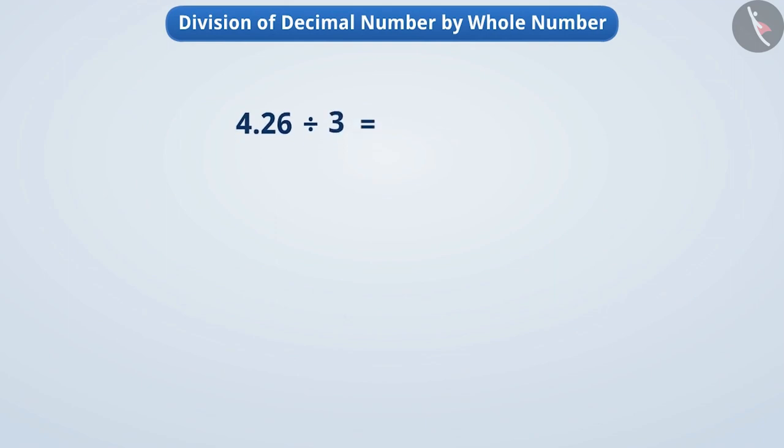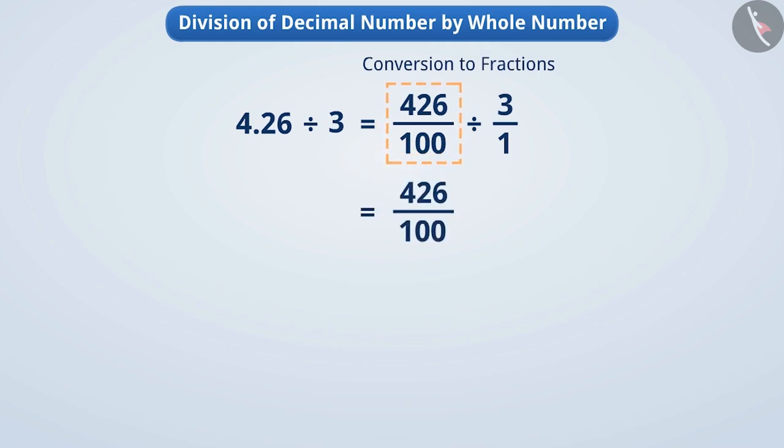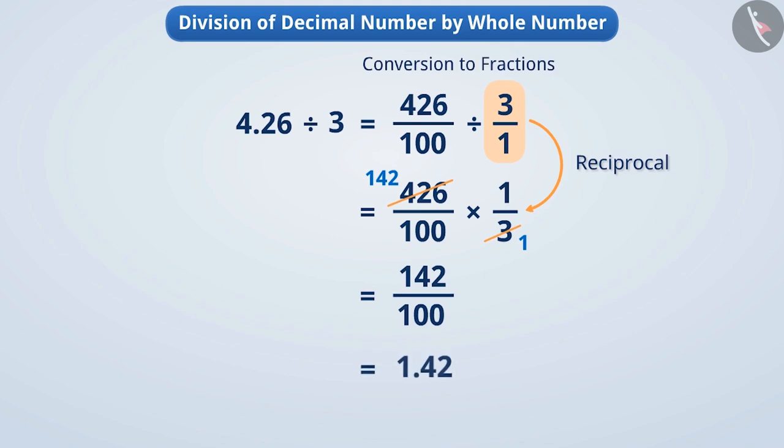To divide decimal numbers in mathematics, we can first express them as fractions. Like here, we have to write 4.26 as 426 by 100. Then, we divide them. To divide fractions, we keep the number that is divided as it is and multiply it by the reciprocal of the second number. In this way, we get 1.42.